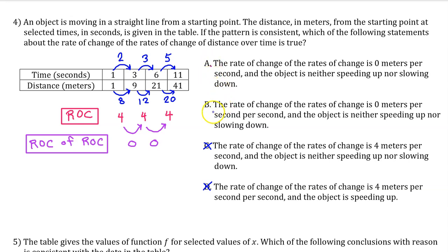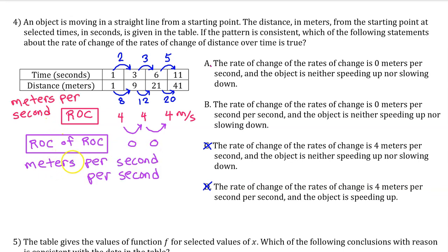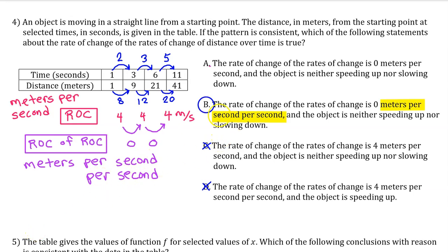We've narrowed it down to options A and B, both saying the rate of change of the rate of change is 0 — whereas C and D say it is 4. The units will help decide between A and B. Rate of change is change in output divided by change in input, so the units are meters per second. The rate of change of the rate of change would therefore be meters per second per second. That tells us the answer is B, which has the correct units. Option A said simply meters per second, which are the units for average rate of change, not rate of change of the rate of change.